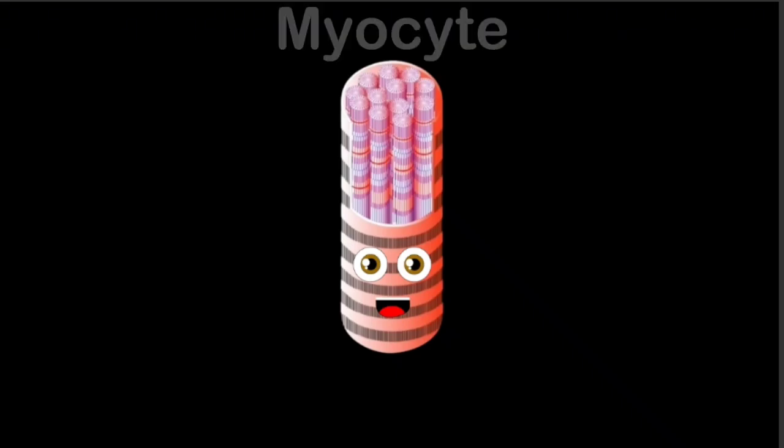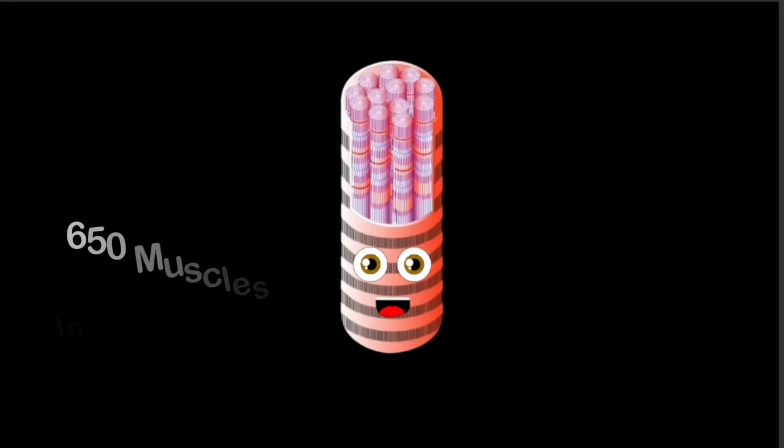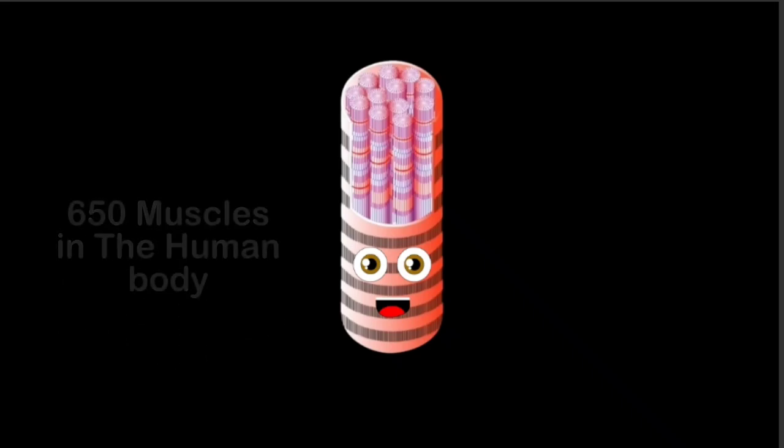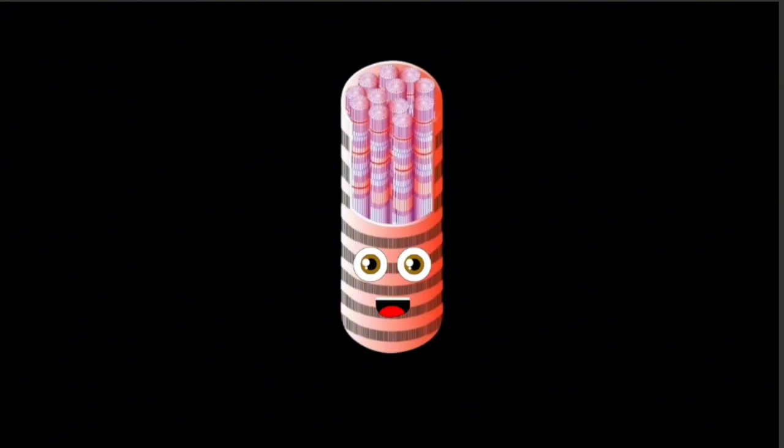I am a myocyte. Your muscles are made up of me. Here's some of the 650 muscles in the human body. Let's look at the abdominals that sit on your tummy. This is a pair of four muscles that when flexed are very bumpy.